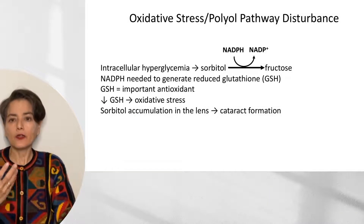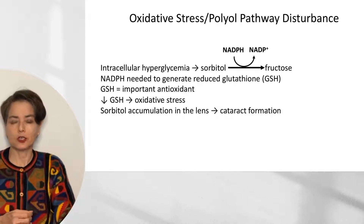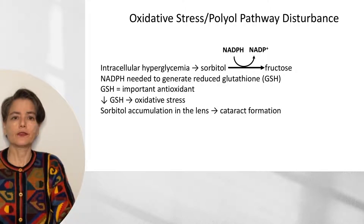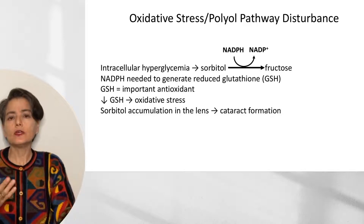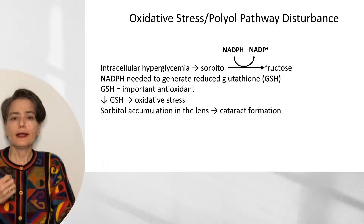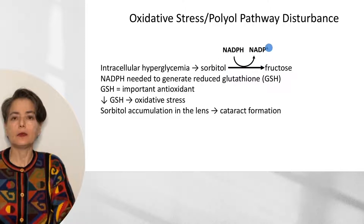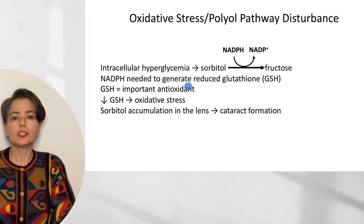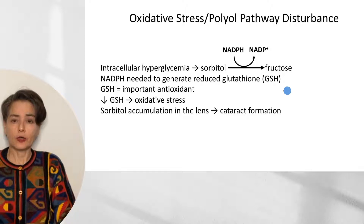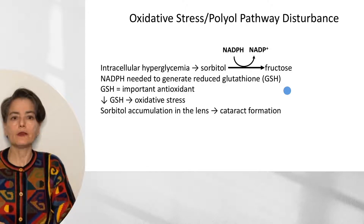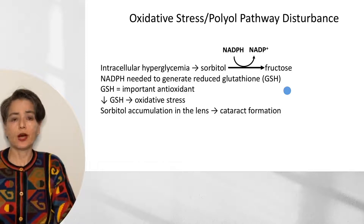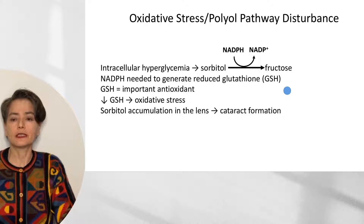The third mechanism is oxidative stress and polyol pathway disturbance. With intracellular hyperglycemia, there is increased production of sorbitol. Sorbitol can be further metabolized to fructose when NADPH is converted to NADP+. This depletes our store of NADPH, which is needed to generate reduced glutathione. As discussed in earlier chapters of Robbins on reactive oxygen species, glutathione is a critical antioxidant — decreased glutathione leads to oxidative stress. Additionally, sorbitol accumulation in the lens directly causes cataract formation and blindness.